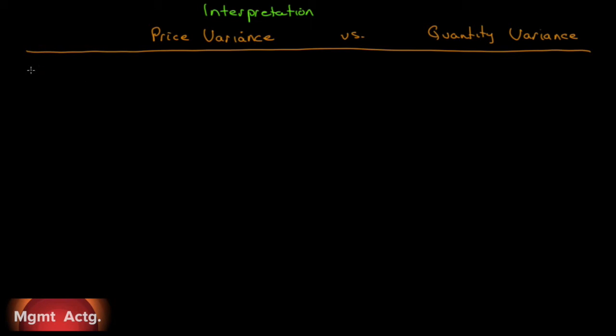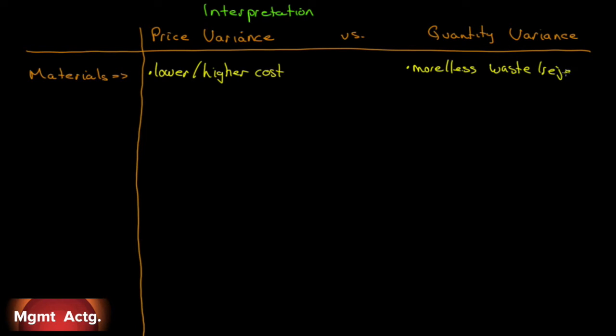How can we generate a price variance in materials? We can experience either a lower or higher cost than what our standard was. We might have a standard price, and suddenly we find that the prices have dropped or the prices have risen. We might buy a lower or higher quality of input.